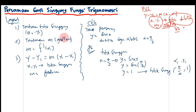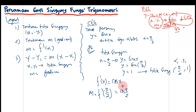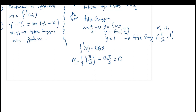Yang kedua, tentukan gradiennya. M sama dengan f'(X). Kita hitung dulu f'(X), yaitu turunan pertama dari fungsi sinus X. Turunan dari sinus X itu sama dengan kosinus X. Maka M sama dengan f'(π/2). Kosinus dari pi per dua sama dengan nol. Maka gradiennya M = 0.